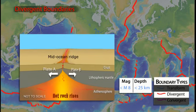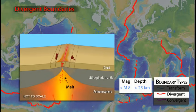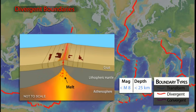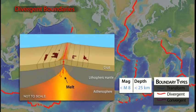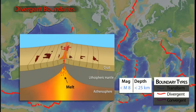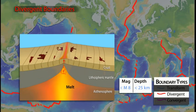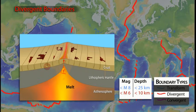At divergent boundaries, oceanic crust forms at spreading ridges where plates pull away from each other. A small volume of the mantle melts to create the crust. The hot, buoyant, upwelling mantle supports the oceanic ridges that form the Earth's longest mountain system. Because temperature increases rapidly with depth at divergent boundaries, there is only a thin layer of brittle rock to fracture in earthquakes. Most earthquakes occur within the upper 10 kilometers and have magnitudes that are generally less than 6.